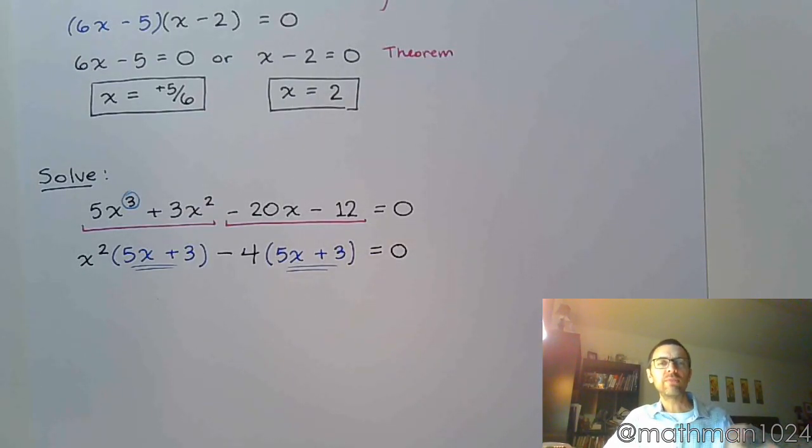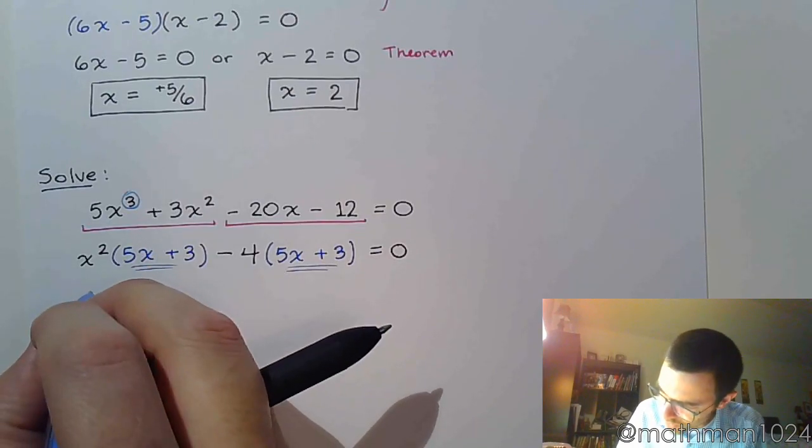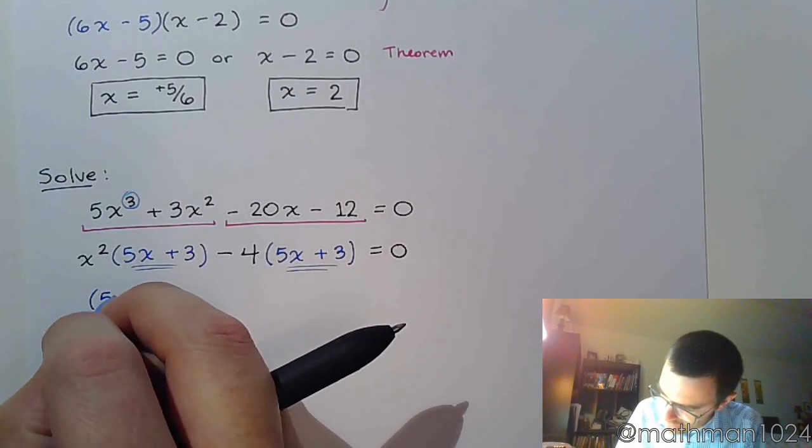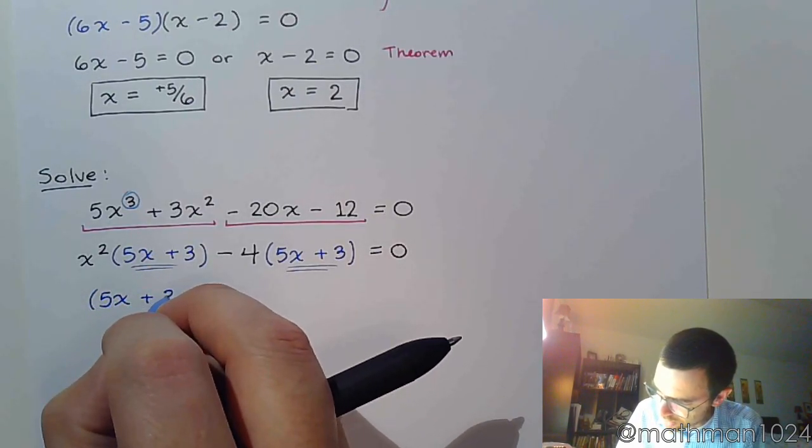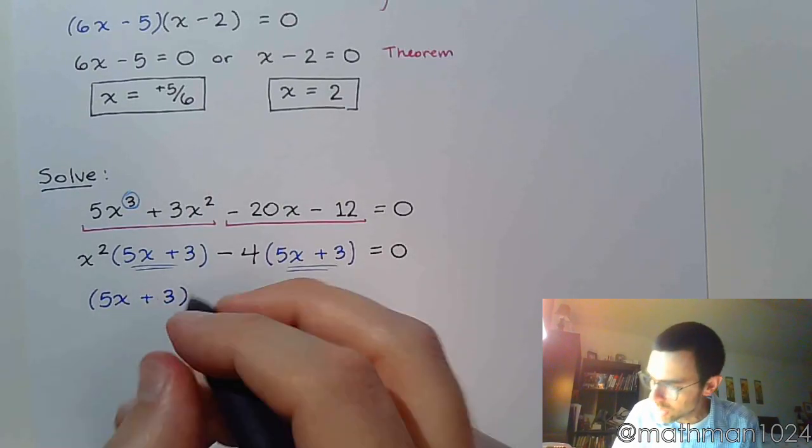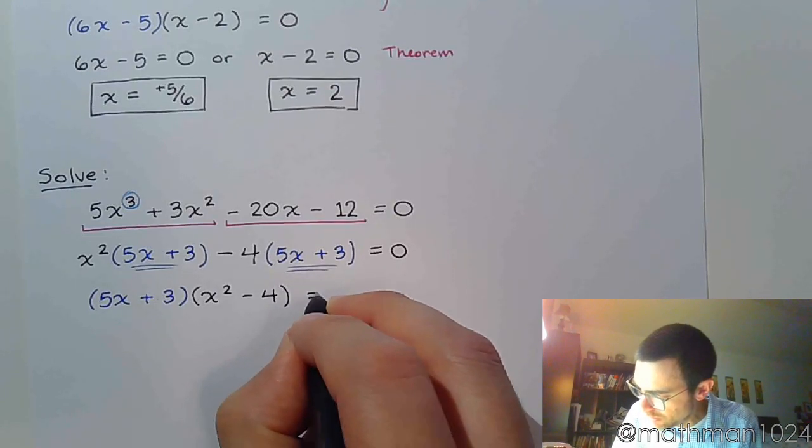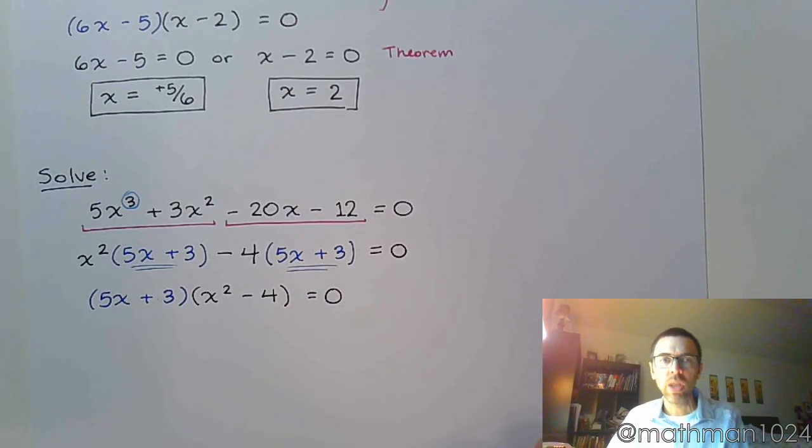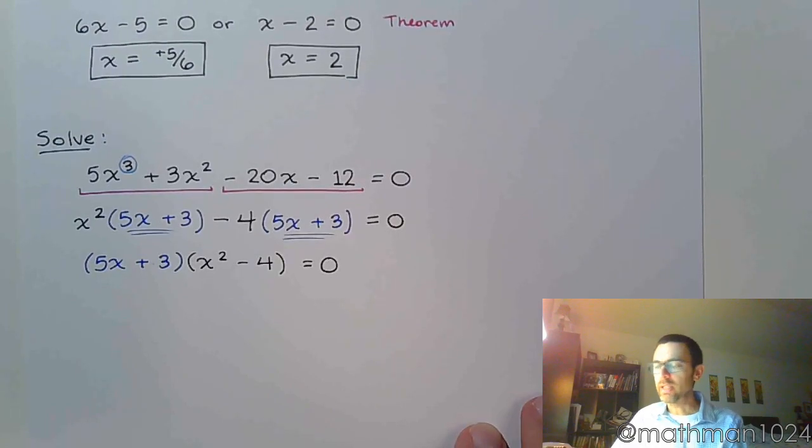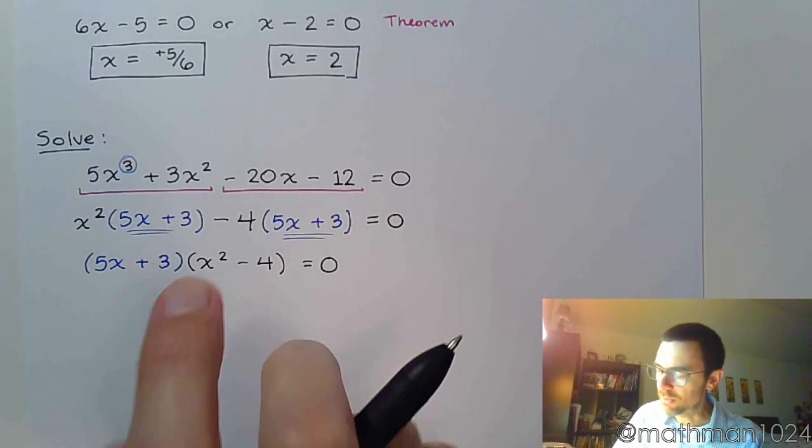If you notice that one of them is say 5x + 3 and the other one is 5x - 3, like they're really close, that typically means that you missed a sign somewhere. Make sure that you're very careful about that. All right, so 5x + 3 is that common factor that I pull out front, and this is times x² - 4. Now we really should factor completely, and x² - 4 can break down even further.